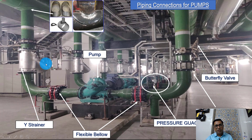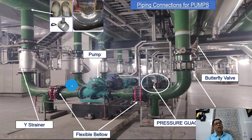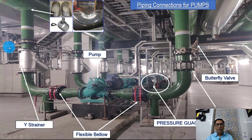Then we have a Y-strainer. From here we can clean the Y-strainer. Then we have a flexible bellow, a pressure gauge. The test point is not here, but it is required wherever the BMS connection is needed. We have flexible bellows over here and a pressure gauge again. Then we have an NRV on the discharge side and then butterfly valve. So these are the two isolating valves.